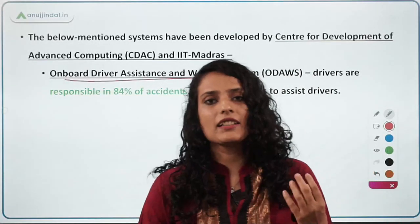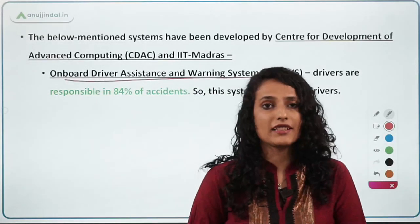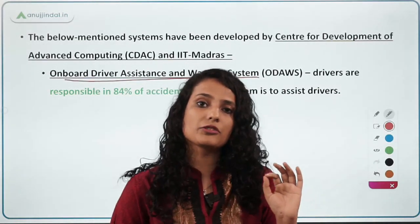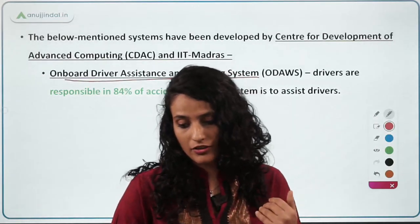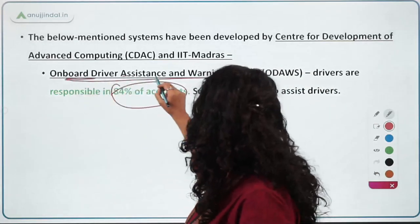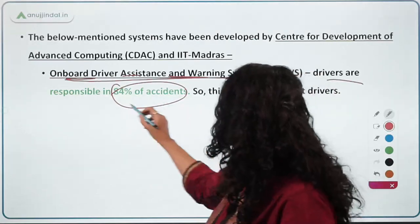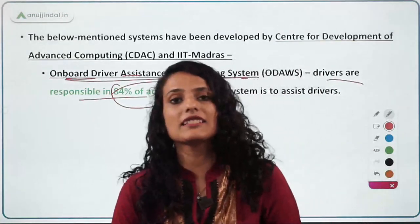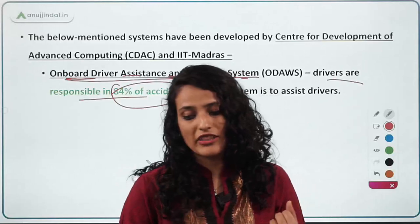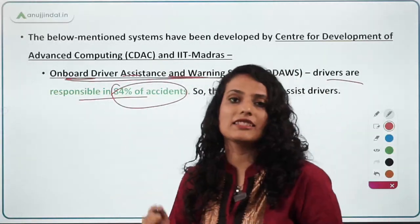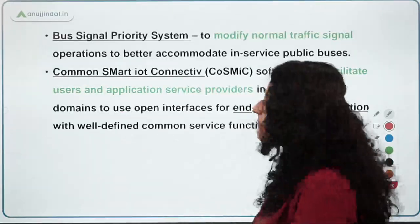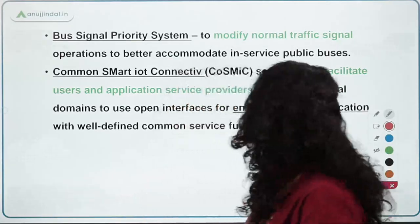The first software is an on-board driver warning system. About 84% of road accidents occur due to driver error, so this system warns and assists drivers whether they are over-speeding or if something is wrong with the engine. Vehicle-bound sensors store key engine data through this app, which warns drivers and helps minimize and control road accidents.